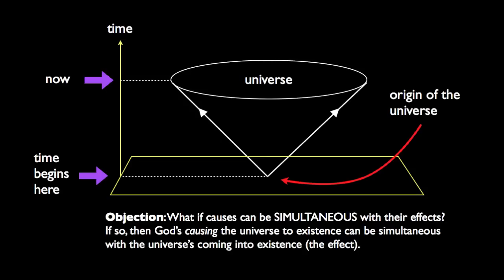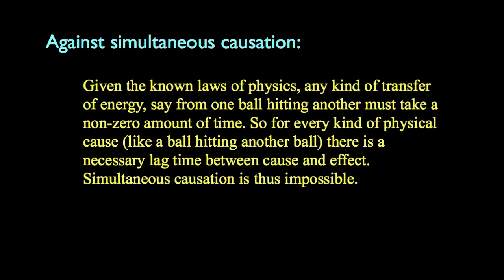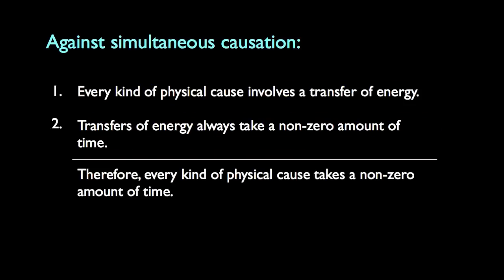He wants information on the status of simultaneous causation in philosophy and in physics — do people generally reject it or accept it? Theophage also has a couple of arguments of his own against simultaneous causation. His first argument: given the known laws of physics, any transfer of energy must take a non-zero amount of time. So for every kind of physical cause, like a ball hitting another ball, there is a necessary lag between cause and effect. Simultaneous causation is thus impossible. Formalized: premise one, every kind of physical cause involves a transfer of energy; premise two, transfers of energy always take a non-zero amount of time; therefore, every kind of physical cause is not simultaneous with its effect.